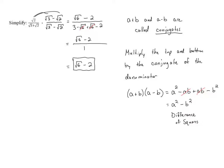Anytime we have a fraction where there are two different terms in the denominator and one or both of them contain radicals, our strategy is to multiply the top and bottom by the conjugate of the denominator in order to get rid of those radicals.